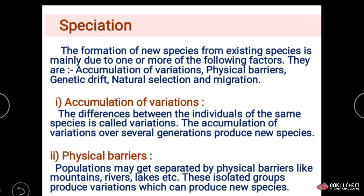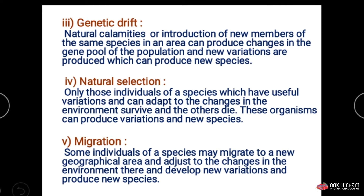The third factor is genetic drift. Natural climate changes or introduction of new members of the same species in an area can produce changes in the gene pool of the population, and new variation produced can lead to new species.